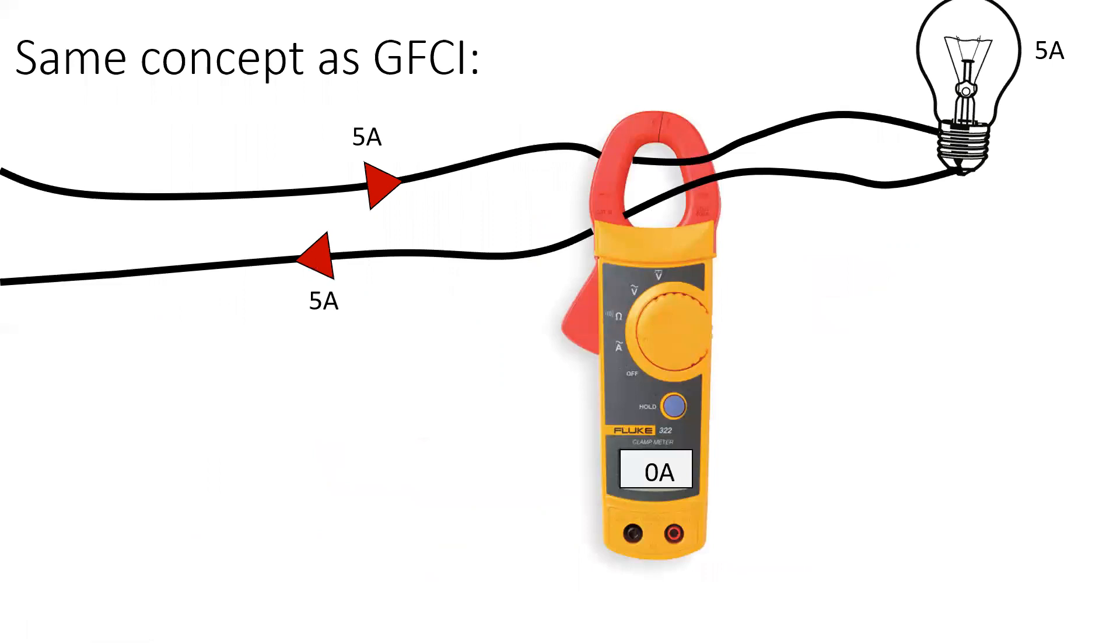You can see the same concept at work with your own clamp amp meter by clamping both conductors of a branch circuit inside the window. And the two fluxes will cancel each other, giving us a resultant of zero amps. You can even do this with a three-phase circuit.